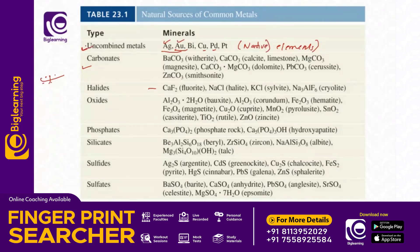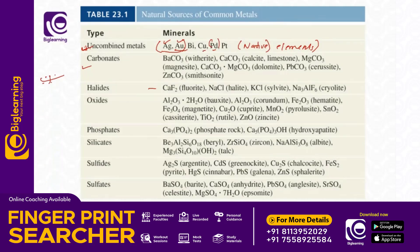If you want to use native elements like gold or silver, you still need to use the metallurgical process. The color of gold may look similar to other minerals like quartz, so you can't always identify it by color alone. This type is a carbonate form. This is calcium carbonate.